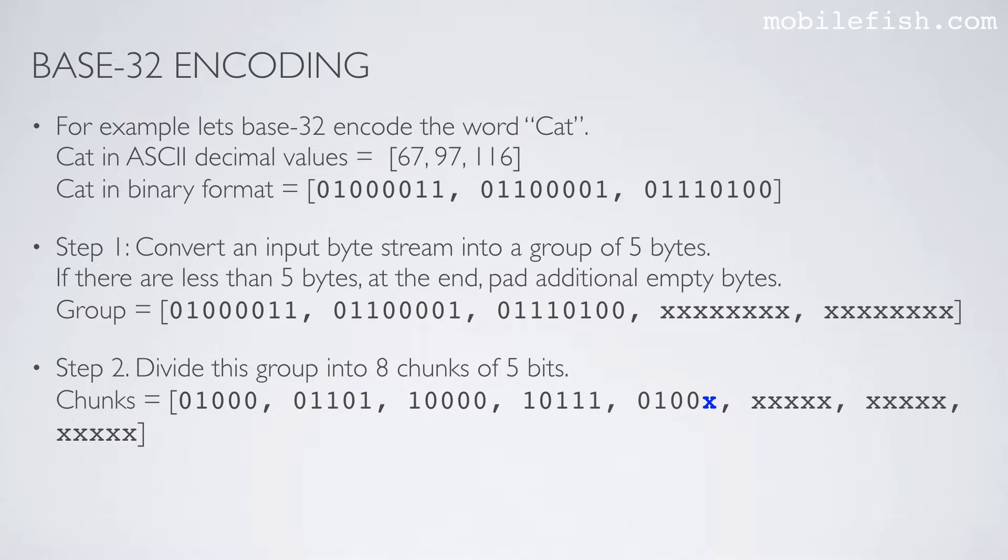Step 2: Divide this group into 8 chunks of 5 bits. Counting through the bits: 1, 2, 3, 4, 5 forms the first chunk. Similarly, 1, 2, 3, 4, 5 forms the next chunk, and so on. Each chunk is identified by counting exactly 5 bits from the byte stream.